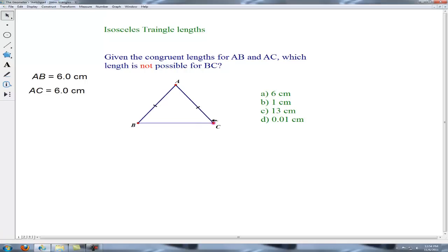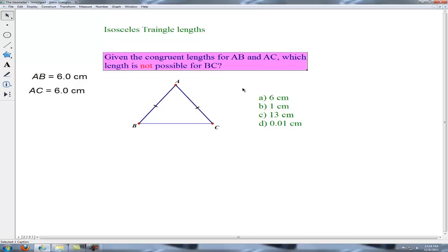but BC is variable. So we do have some kind of maximum, and over here we can see we're approaching some minimum as well. So let's consider that dynamic construction there to answer the question of which length is not possible for BC? Is it 6, 1, 13, or 0.01?